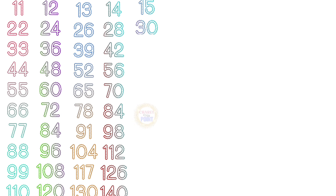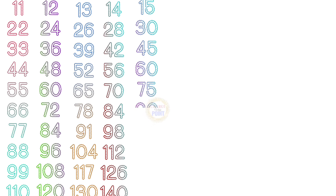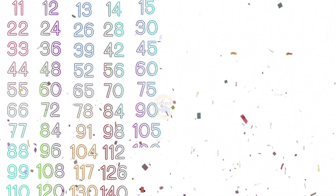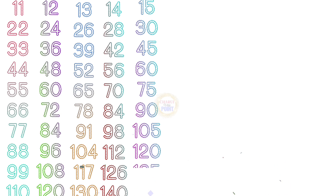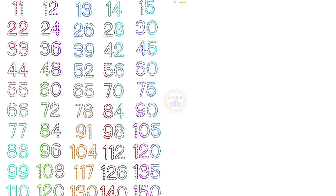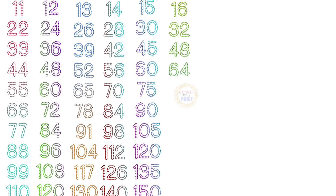Table of 15: 15×1=15, 15×2=30, 15×3=45, 15×4=60, 15×5=75, 15×6=90, 15×7=105, 15×8=120, 15×9=135, 15×10=150.